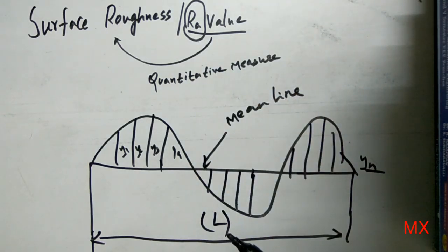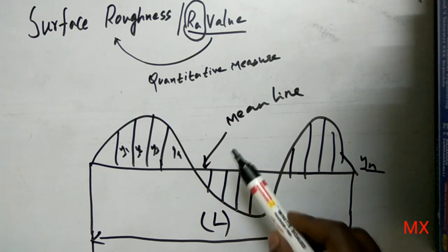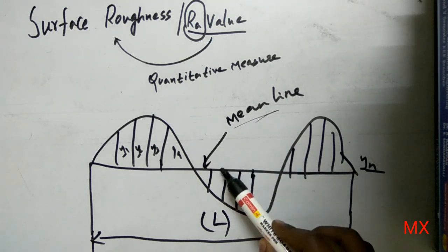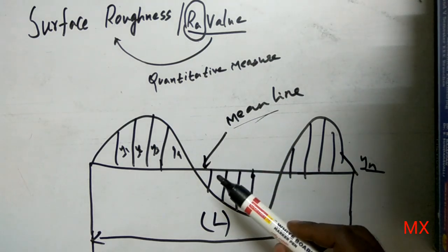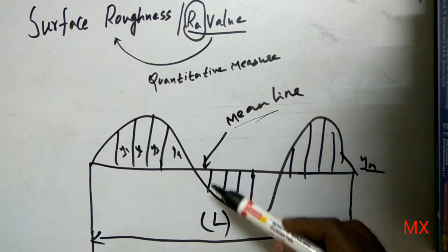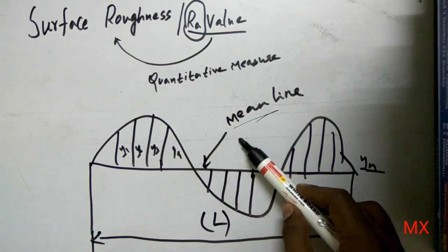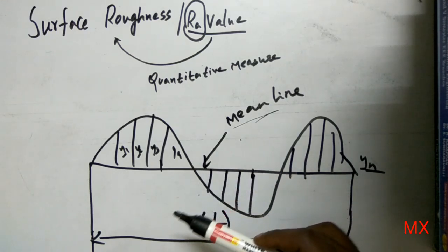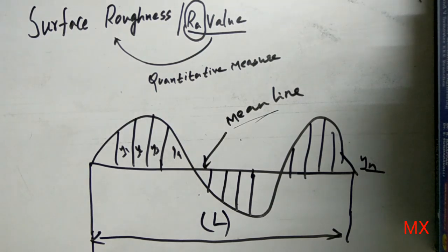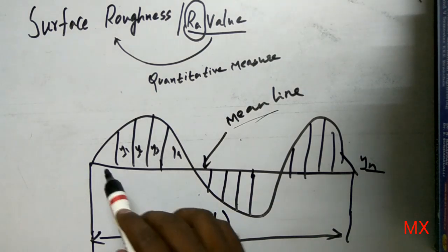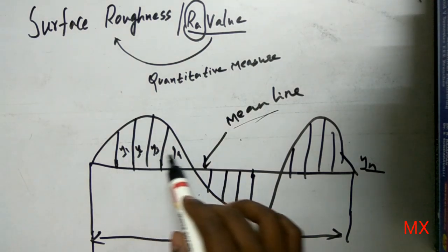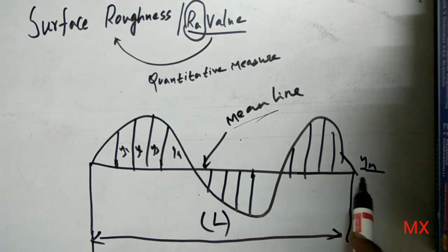Next, the reference line or mean line is drawn such that it divides the profile into two equal areas — that is above and below. You should also note the deviations: Y1, Y2, Y3 up to Yn.